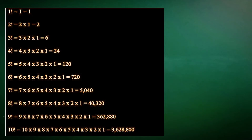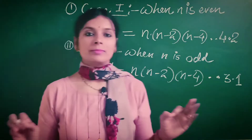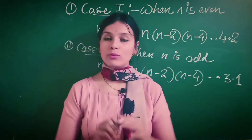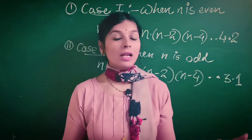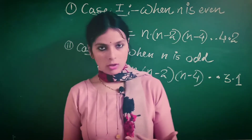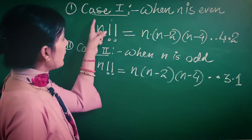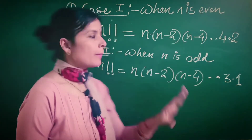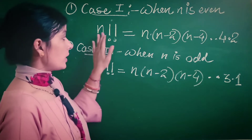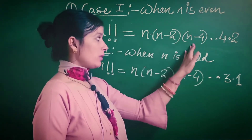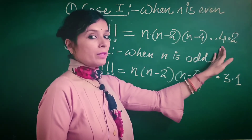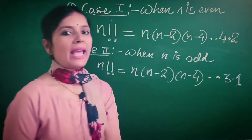Regular factorial for any non-negative integer is a product of all the integers from n down to 1. To define double factorial for any non-negative integer we need to know whether n is even or odd, because there are two cases. Case one: when n is even, n double factorial is n × (n−2) × (n−4) × ... × 4 × 2.